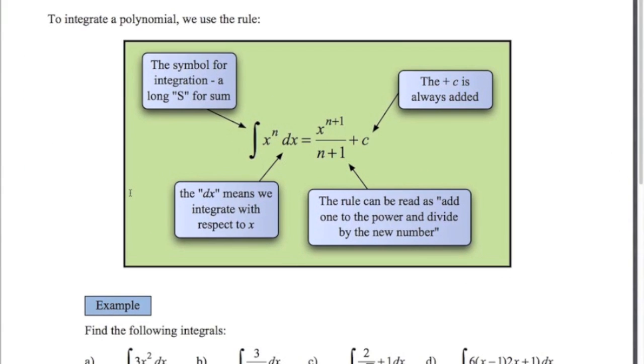So here is the rule for integration for basic polynomials. We've got x to the power of n. We use this long S symbol here representing integration. dx just means that we're integrating with respect to the variable x. And here's the rule. Simply said, we add one to the power and divide by that new number.